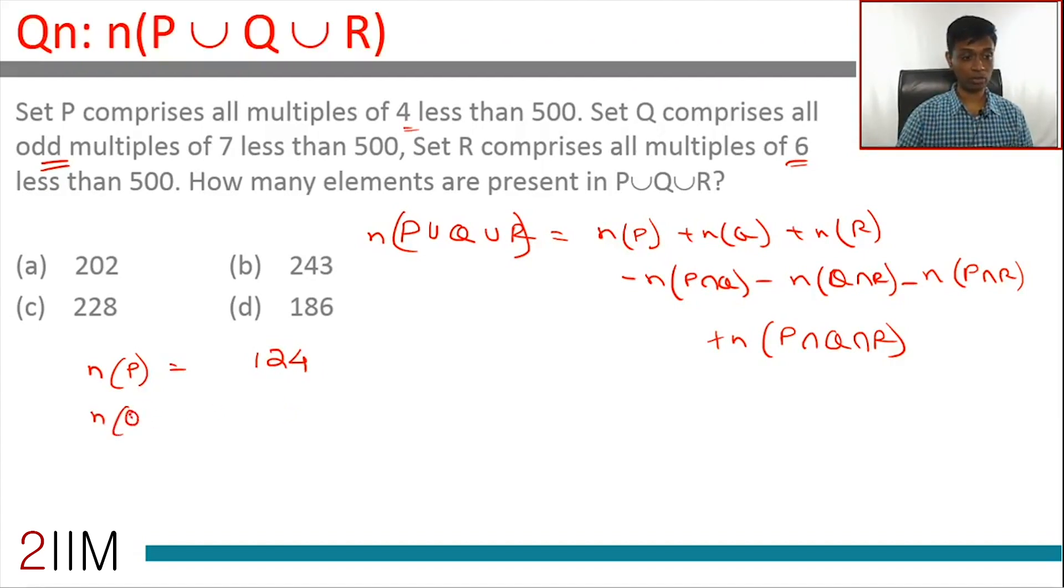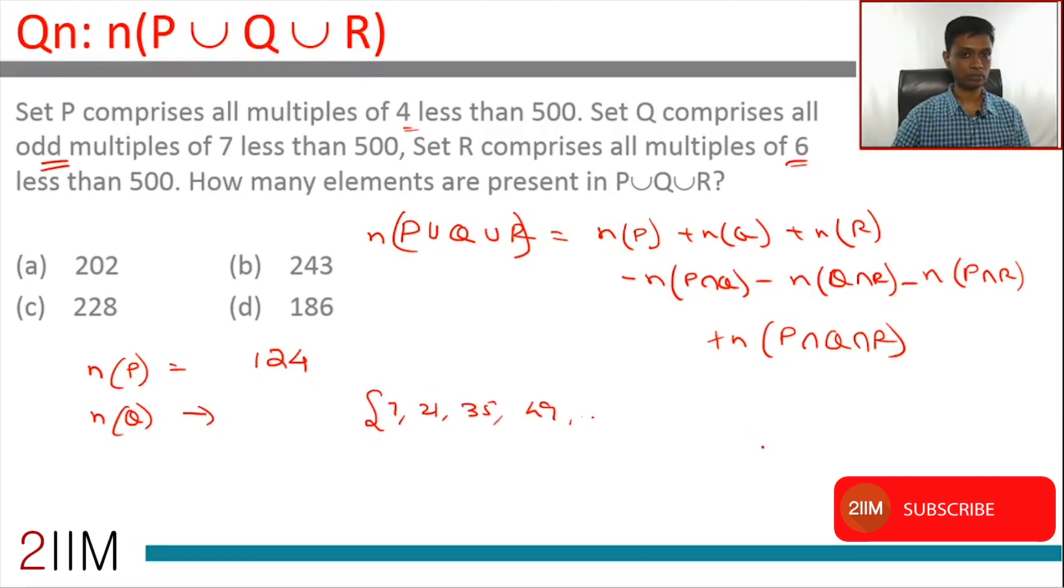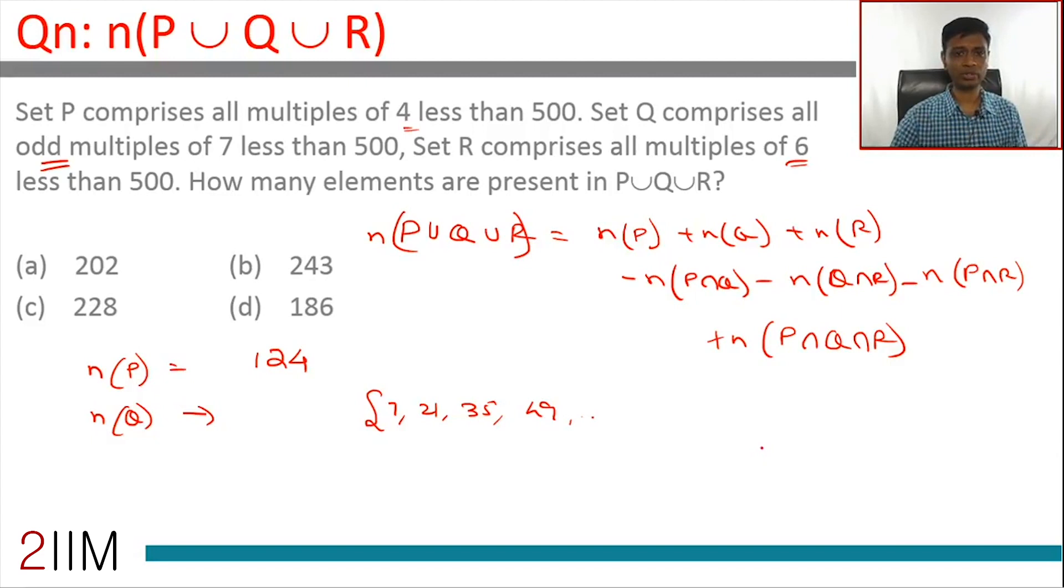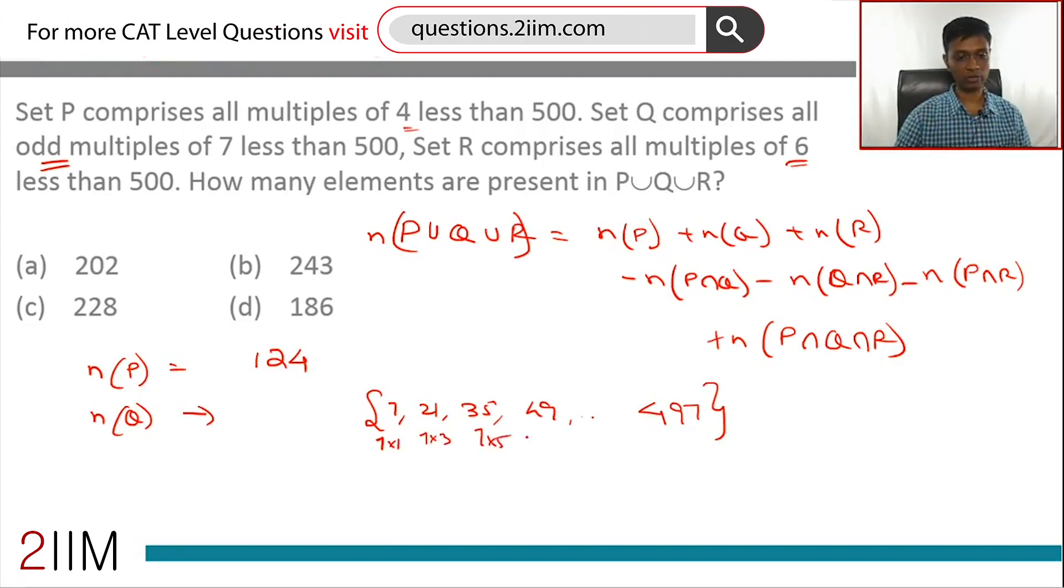All odd multiples of 7 less than 500. This is interesting because it's not multiples, it's odd multiples. So Q has elements 7, 21, 35, 49, and so on. The last element: 497 is 7 into 71. So 7 into 1, 7 into 3, 7 into 5, all the way till 7 into 71. All odd numbers till 71 - there'll be 36 numbers.